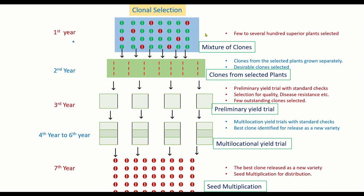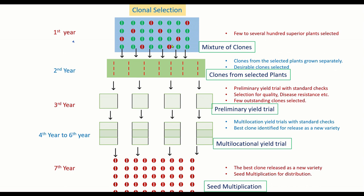The procedure of clonal selection: from a mixed population of clones, we select phenotypically superior individuals — several hundreds of superior plants are identified. The selected plants are grown separately in lines, and desirable clones are selected from those lines. These are then tested in preliminary yield trials against a local check variety, which is a variety popular in the locality. Each line has to be tested against one or a few check varieties.